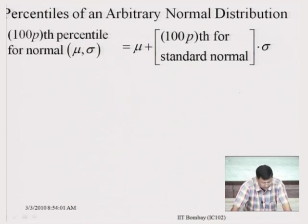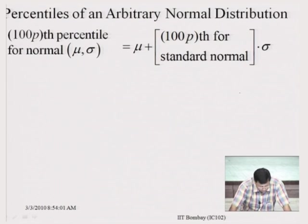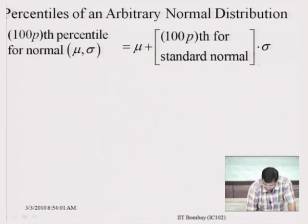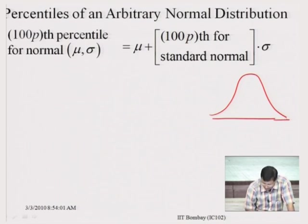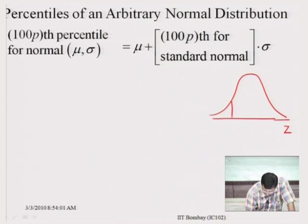Now let us look at percentiles of an arbitrary normal distribution. We have already looked at percentiles for a standard normal curve. The 100p-th percentile for a normal variable with mean mu and SD sigma equals mu plus the 100p-th percentile of the standard normal times sigma. On the standard normal curve Z, if this area is p, then the 100p-th percentile is given by eta_p.